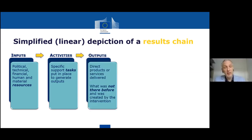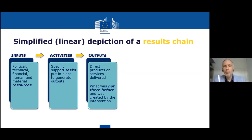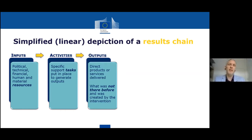These tasks have a very clear aim of producing things. These things that are produced are the outputs. You can think of outputs as products, services, or maybe even infrastructure that are put in place by the intervention. It's important to realize that these are things that were not there before — zero before — and the intervention produces them, so at the end of the intervention they are there purely because of the intervention.